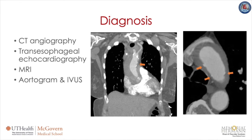However, complete imaging of the distal arch and the descending aorta is limited with TEE, and it is highly operator dependent. Aortogram was the gold standard in the past but is rarely used nowadays with the era of CT angiography. Intravascular ultrasound can also be used and is highly sensitive and specific.